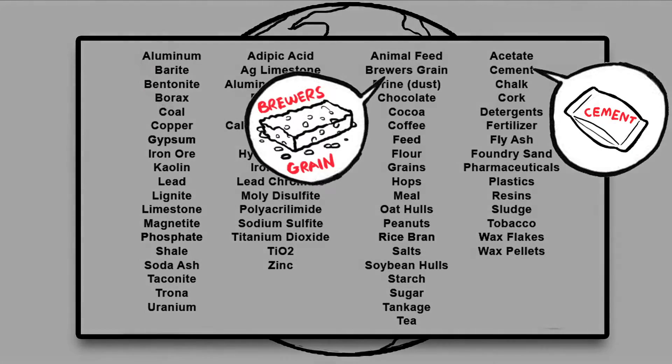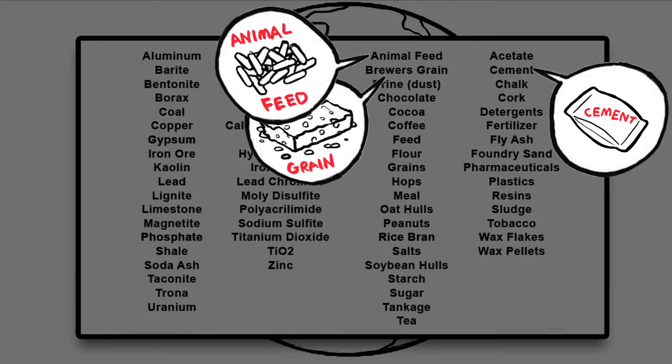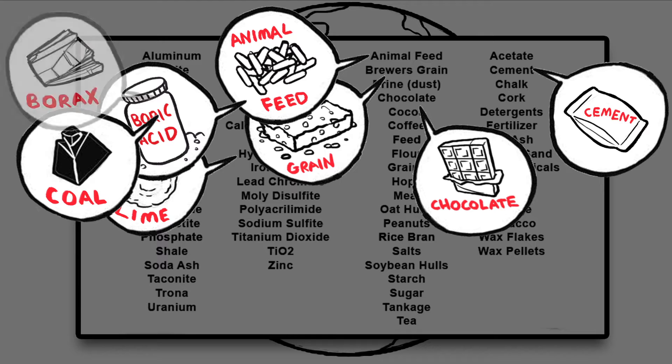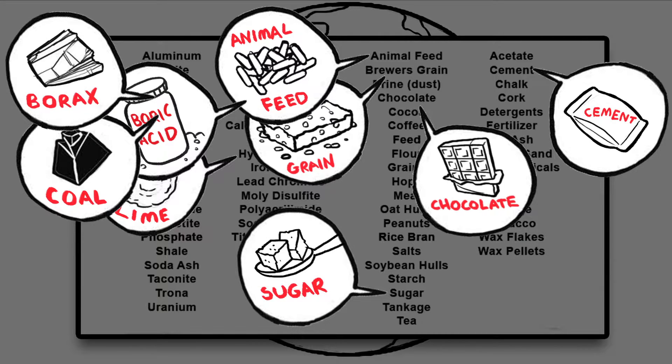Cement, brewers grain, animal feed, hydrated lime, chocolate, boric acid, coal, borax, sugar. The list goes on and on.